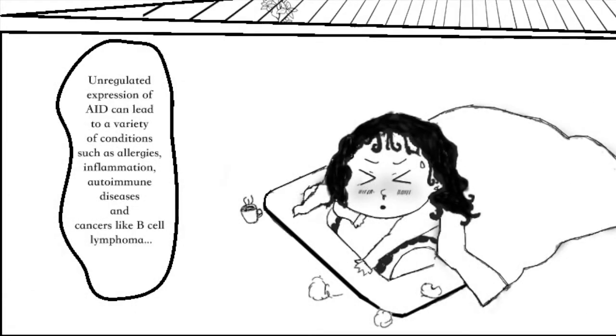Unregulated expression of AID can lead to a variety of conditions such as allergies, inflammation, autoimmune diseases, and cancers like B-cell lymphoma.